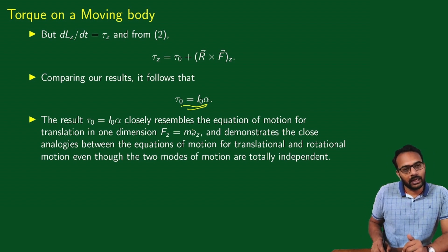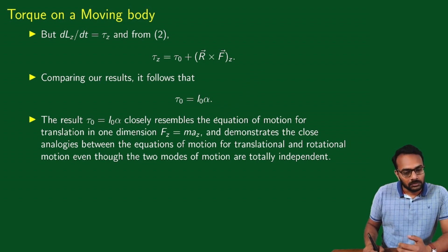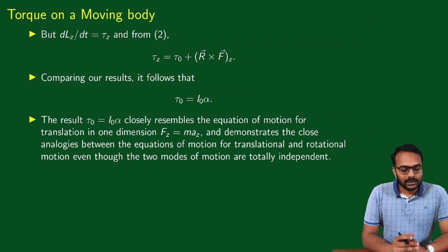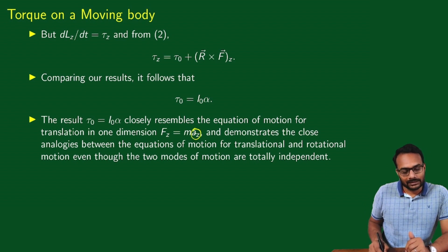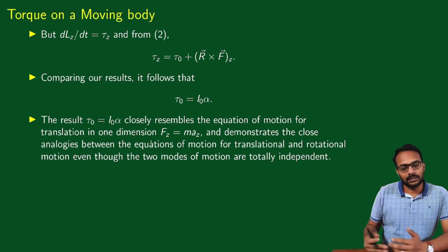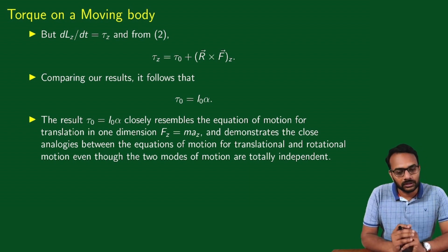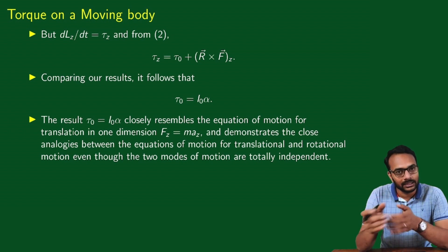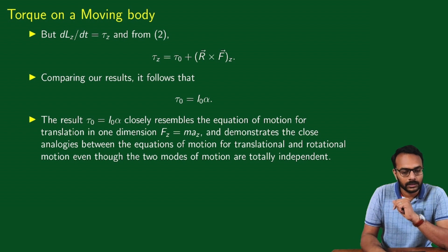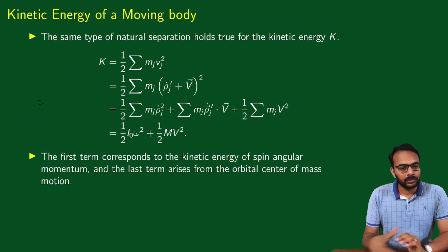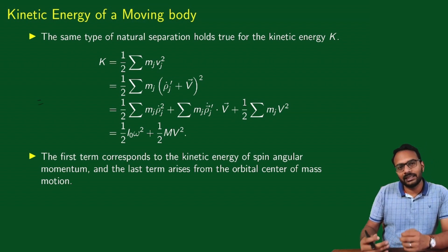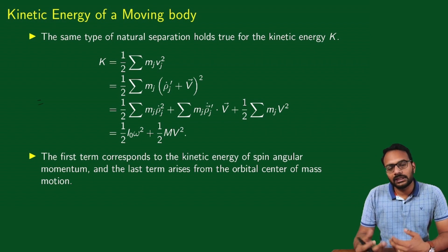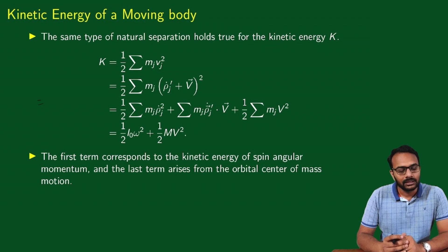This result tau-0 = I0*alpha is analogous to F = mA. In the translational equation, we have mass m and linear acceleration A; in the rotational equation, we have moment of inertia I0 about the center of mass and angular acceleration alpha, with torque tau-0 corresponding to force F. This shows the close analogy between equations of motion for translation and rotation, even though the two modes of motion are totally independent and can be separated.